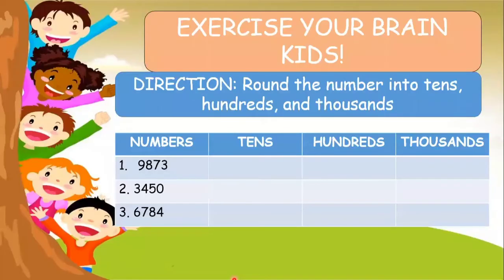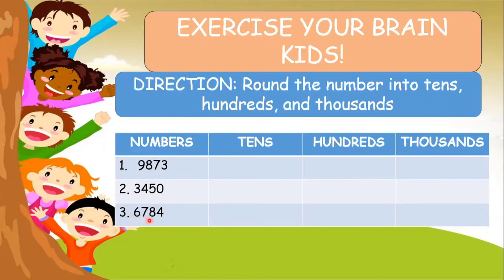Now let's have an activity. The direction is to round the number into tens, hundreds, and thousands. The given numbers are: number one, 9,873; number two, 3,450; number three, 6,784. I will give you time — start answering kids.